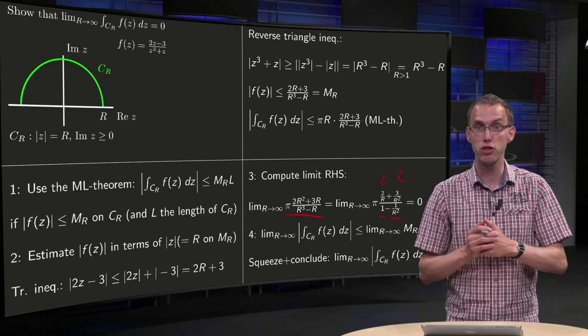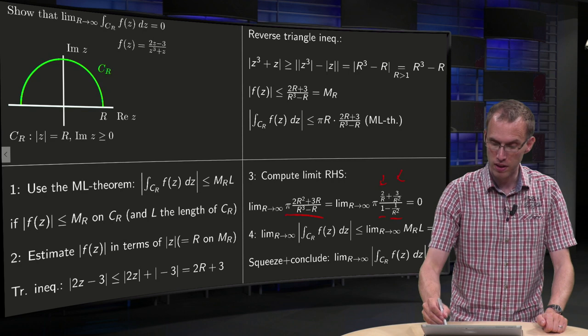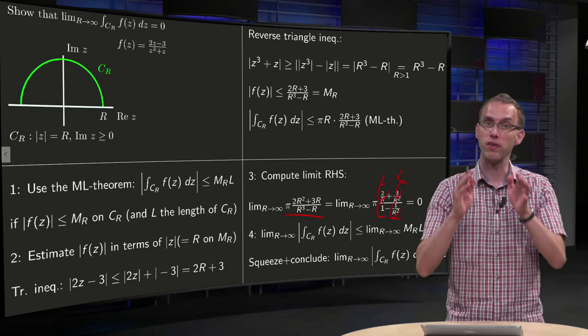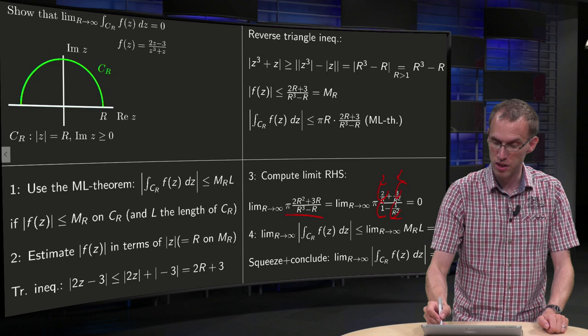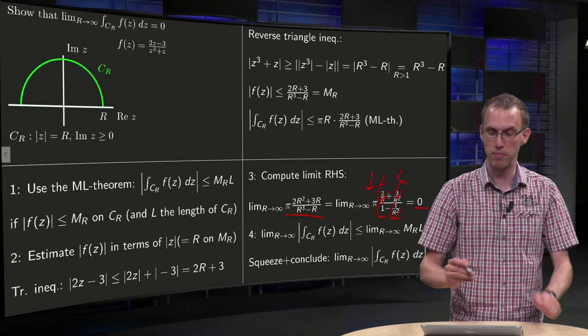We get a 0, a 0, a 1 and a 0, so we get 0 over 1 equals 0. A factor of pi doesn't matter of course.